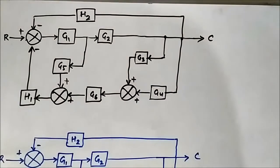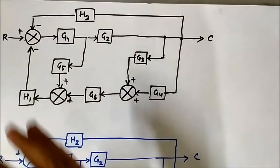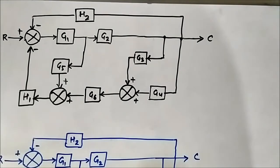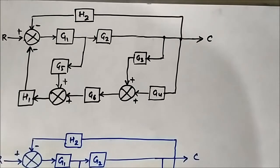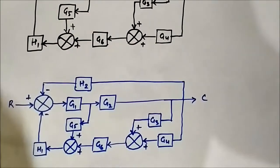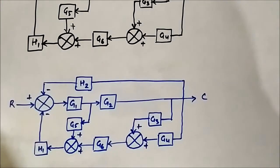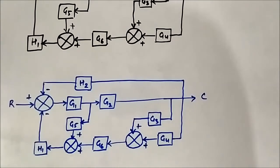Here we have the block diagram. This is the question we have to simplify and find out the transfer function C by R, output by input. In this portion we are going to make the changes. This is the same thing redrawn. Here we will make the changes and apply the block diagram reduction rules to simplify the diagram.